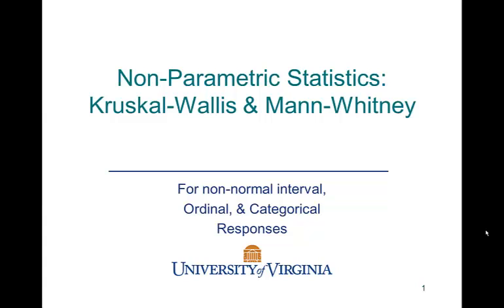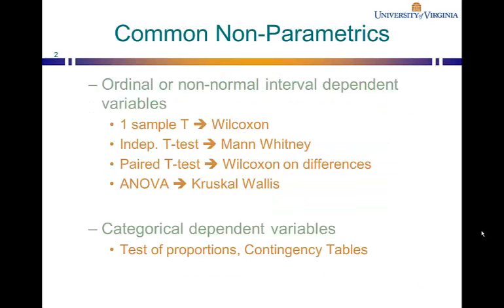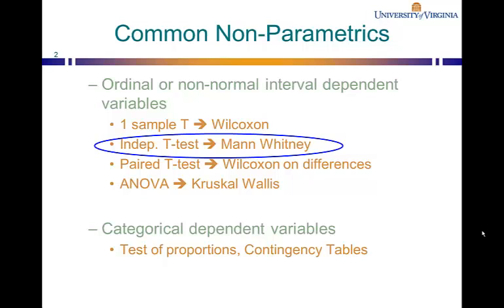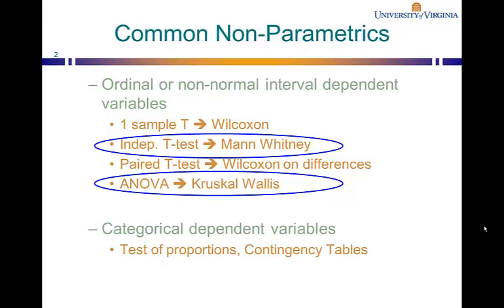In this video, we'll be looking at two types of nonparametric tests: Kruskal-Wallis and Mann-Whitney. The Mann-Whitney test is a nonparametric version of the independent sample t-test, and it's used when dealing with ordinal or non-normal interval dependent variables. Similarly, the Kruskal-Wallis test is a nonparametric version of the ANOVA, and it's also used when dealing with ordinal or non-normal interval dependent variables when you have more than two samples.